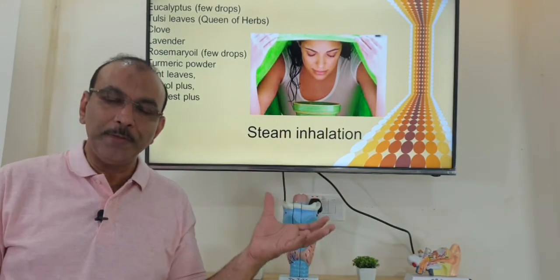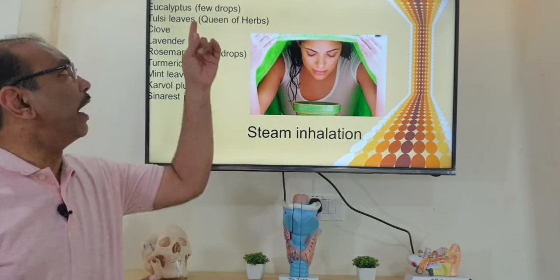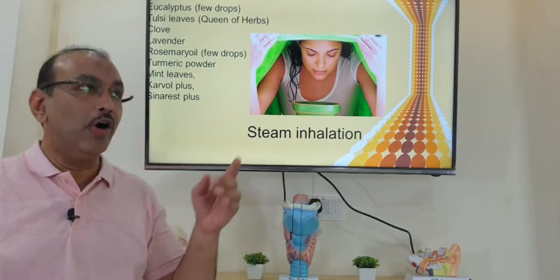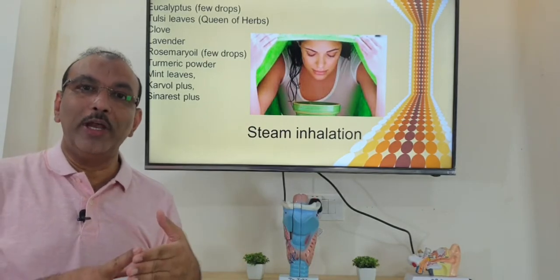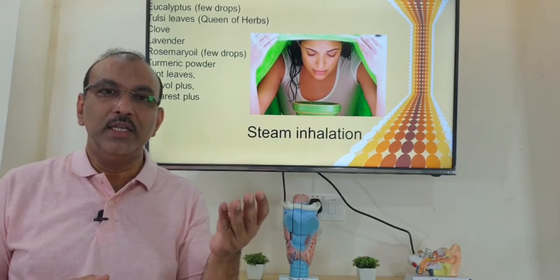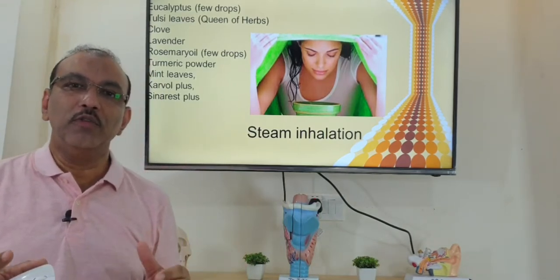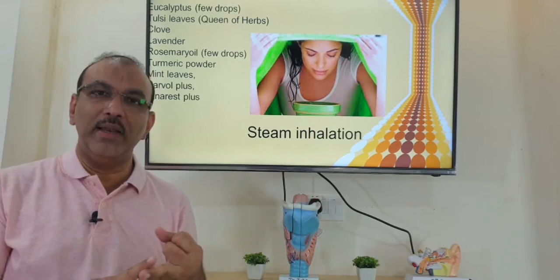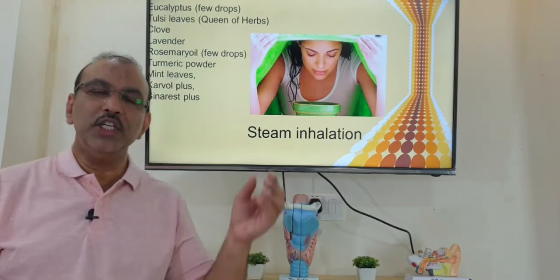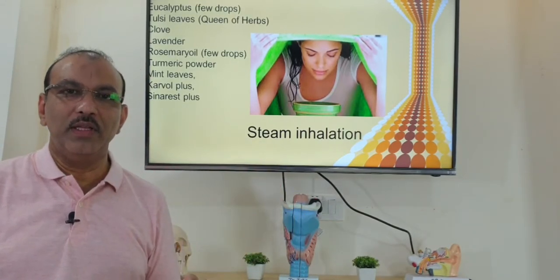Steam inhalation can be done with plain water, or you can add eucalyptus oil — 5 or 6 drops — or tulsi leaves, 5 or 6 in number, or mint leaves (podina), or clove, lavender, rosemary oil. These are essential oils. Or you can use over-the-counter products from the pharmacy like Carvol Plus or Sinarus Plus. Turmeric powder is also good — it is antibacterial, antiviral, antifungal, antiseptic, and antioxidant. Just a few drops of oil or 4-5 leaves added to the water is very effective.